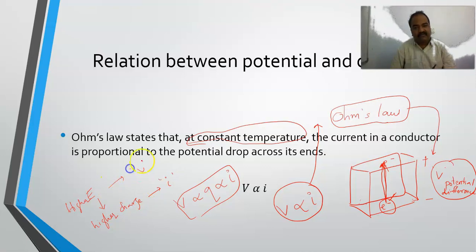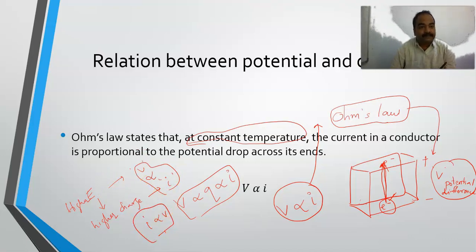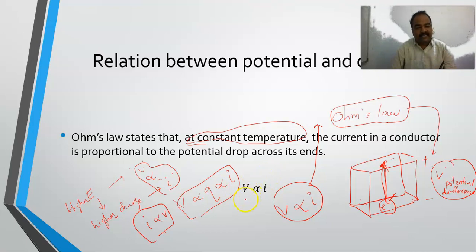V is proportional to I, or in other words, I is proportional to V — at constant temperature. So this is the relation between potential and current. As of now, you should remember: V is proportional to I.